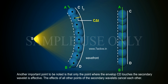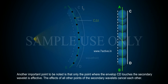Another important point to be noted is that only the point where the envelope CD touches the secondary wavelet is effective. The effects of all other points of the secondary wavelets cancel each other.